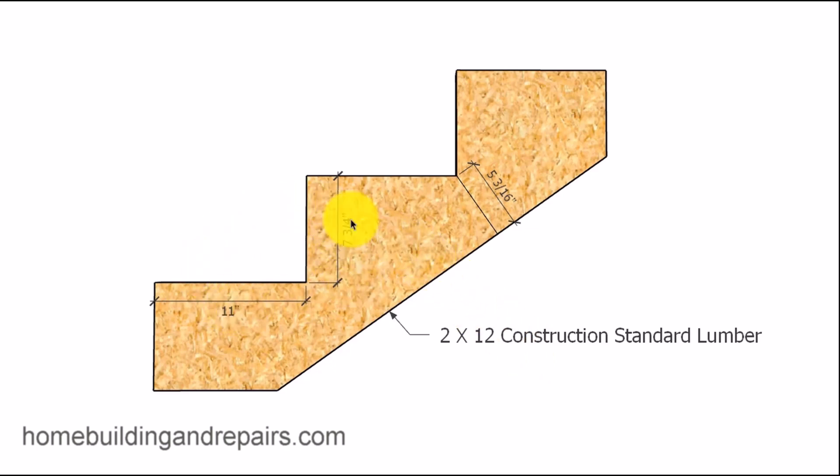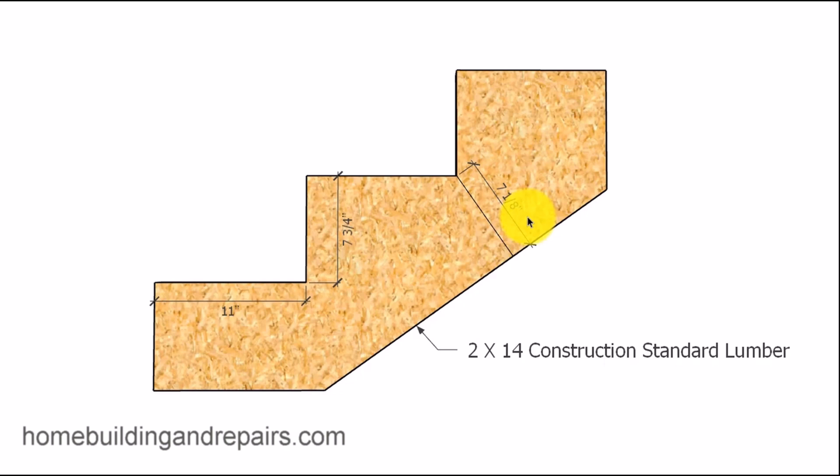But by now, you're starting to get the picture here. 11 inch tread, 7 and 3 quarter inch riser, 2x12. This is how much meat we got left on the stringer. 2x14 is going to be even larger. And I don't think this is necessary for a small set of stairs.